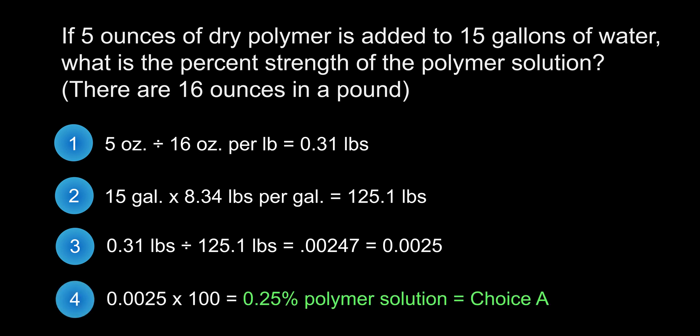In part 4, we convert our previous answer to a percent. 0.0025 multiplied by 100 is 0.25%. This is the percent strength of the polymer solution and our correct answer, choice A.